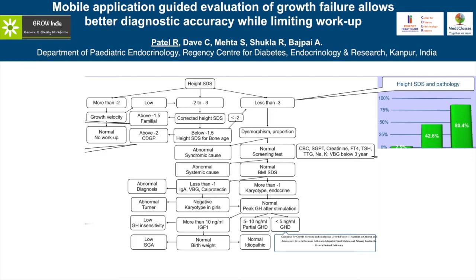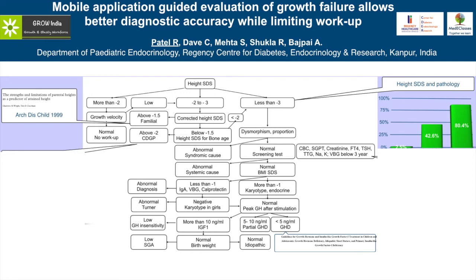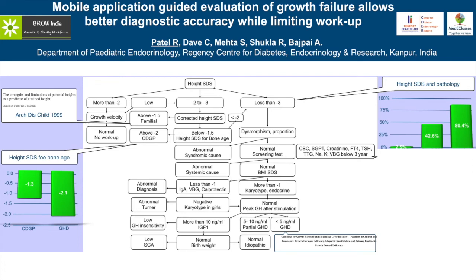For somebody whose height SDS is between minus 2 and minus 3, the next step is to exclude familial short stature, for which we use a target height SDS of greater than minus 1.5 as the criterion, based on published data. After excluding familial short stature, the next consideration is constitutional delay of growth and puberty, and based on our own data we use a height SDS for bone age of greater than minus 2 as an indicator of CDGP.